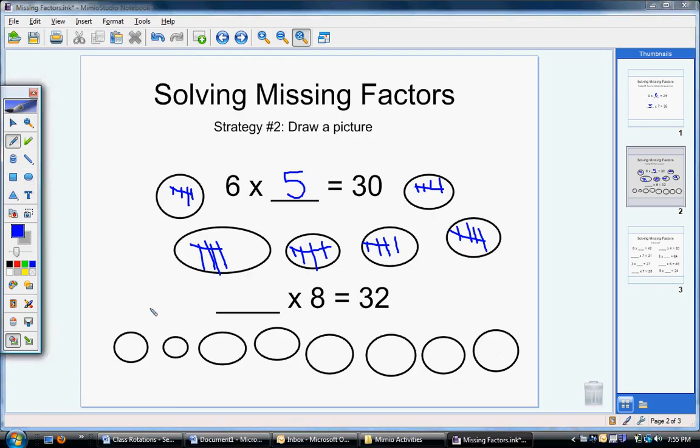And I want to take my thirty-two tallies and share them equally in these eight circles: 1, 2, 3, 4, 5, 6, 7, 8, 9, 10, 11, 12, 13, 14, 15, 16, 17, 18, 19, 20, 21, 22, 23, 24, 25, 26, 27, 28, 29, 30, 31, 32. I ended up with my product of thirty-two. I can see that each circle clearly has four tallies in it. So eight times four is going to equal thirty-two.